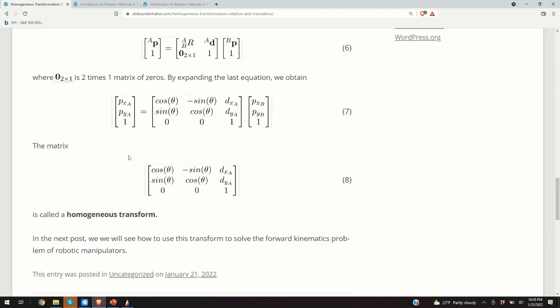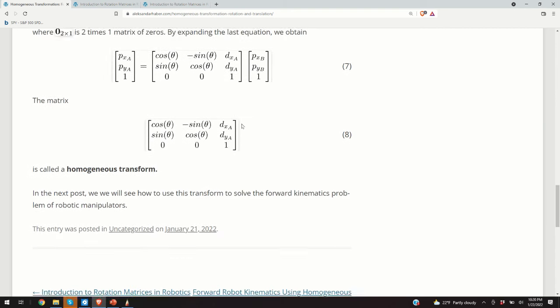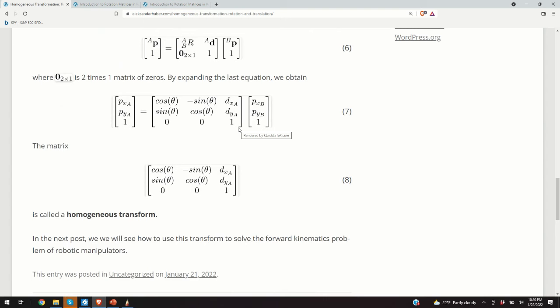So this matrix is called homogeneous transform. It has many applications in robotics, in computer graphics, and in other fields. I hope that you like this video. If you like the videos I make, please subscribe or support my channel. Thank you very much and have a nice day.